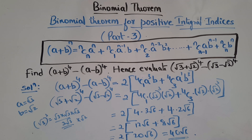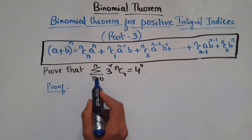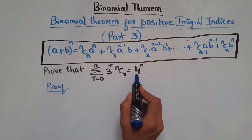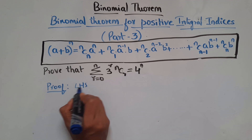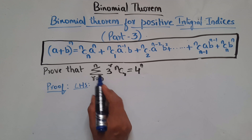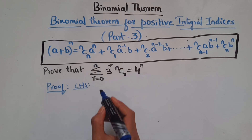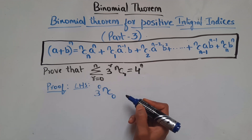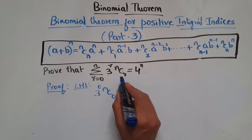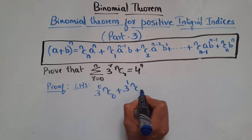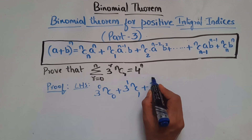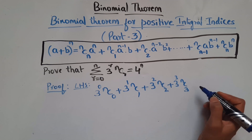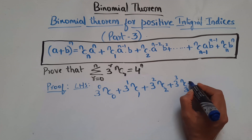Now let's move to the next question. Prove that Σ(r=0 to n) 3^r · nCr = 4^n. We take the LHS: expanding the sigma, r takes values from 0 to n. Substituting: 3⁰·nC0 + 3¹·nC1 + 3²·nC2 + 3³·nC3 + ... + 3^n·nCn.